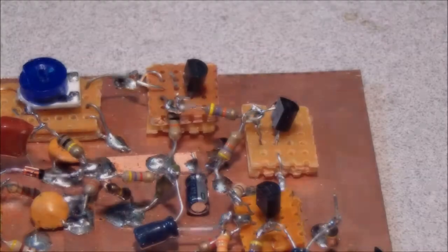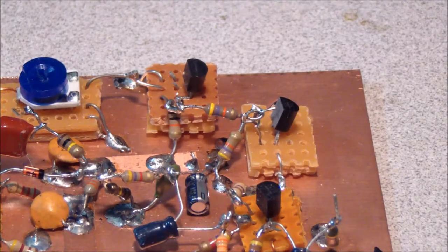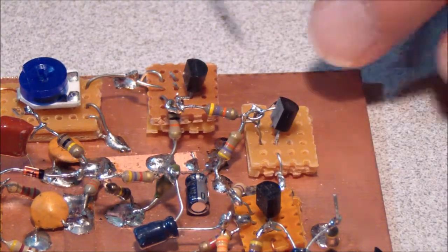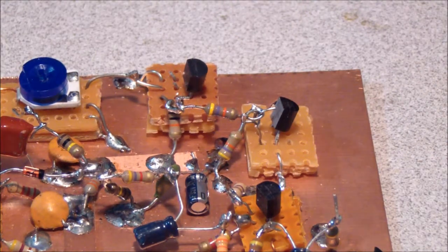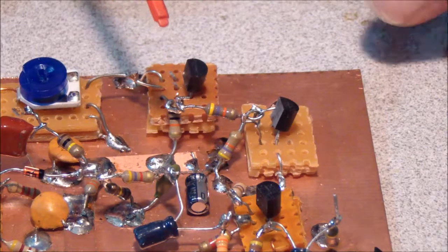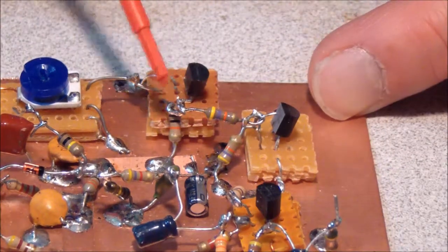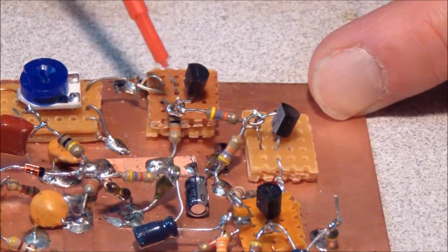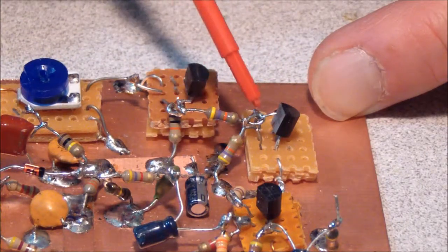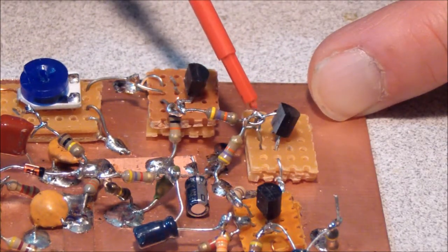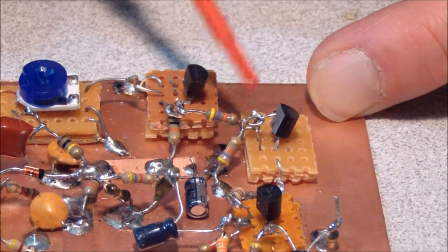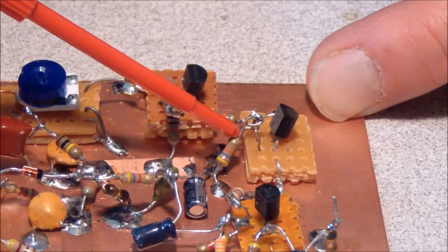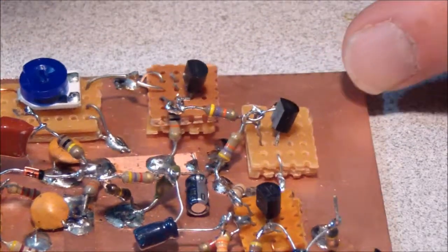So we have two 47K resistors in this base circuit. And the first 47K we installed went from the collector of the previous stage and it goes to the base of the second AGC stage. And then at the base connection, we have another 47K that goes to ground.